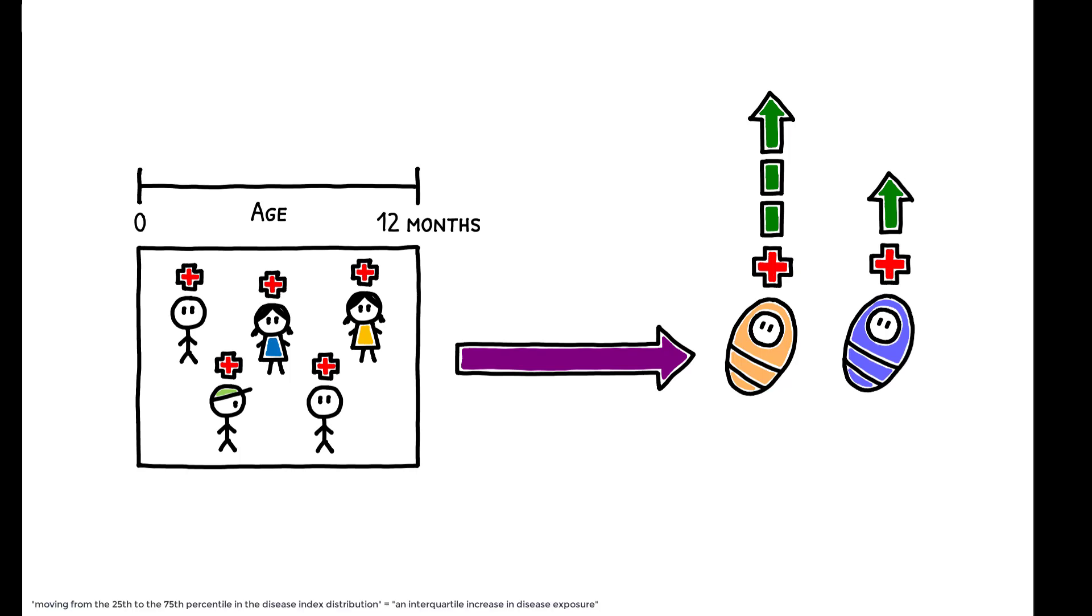Moving from the 25th to the 75th percentile in the disease index distribution is associated with a 32.9 percent differential increase in the number of acute respiratory illness hospitalizations in the first year of life for younger relative to older children. The effects are even stronger when disease exposure is measured over the first six months of life, which supports the conjecture that infants are particularly vulnerable over those first months.